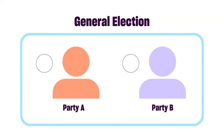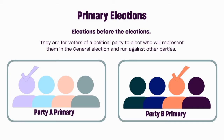During the general election, we may hear friends and family say that they don't like the candidate in their political party and don't want to vote. We can tell them that the next primary election is their chance to choose a candidate that they do like in their party. Primary elections are often called the elections before the elections.